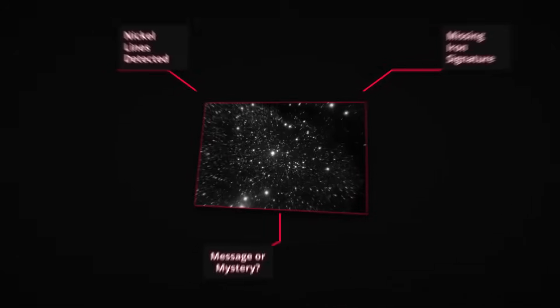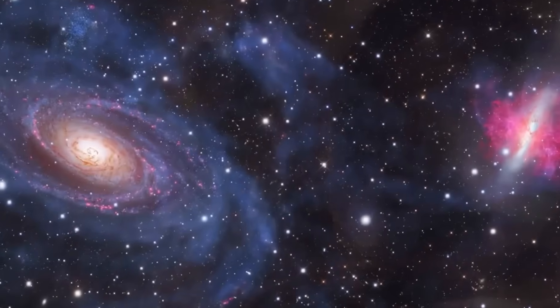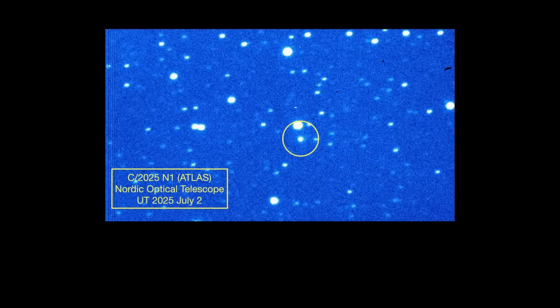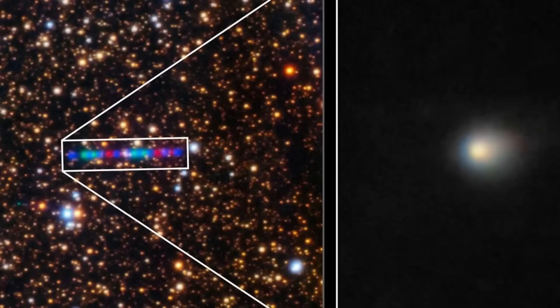To many scientists, this looks like a message written in light, a signature of something different, perhaps even intentional. If it's natural, we'll need a brand new explanation. If it isn't, this could be the first sign that Atlas is more than just another comet.